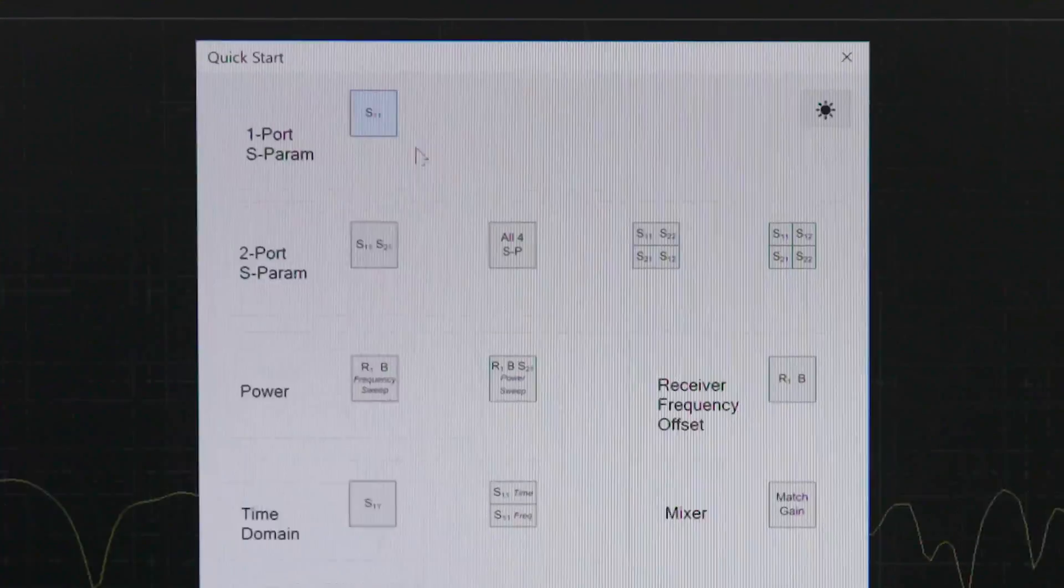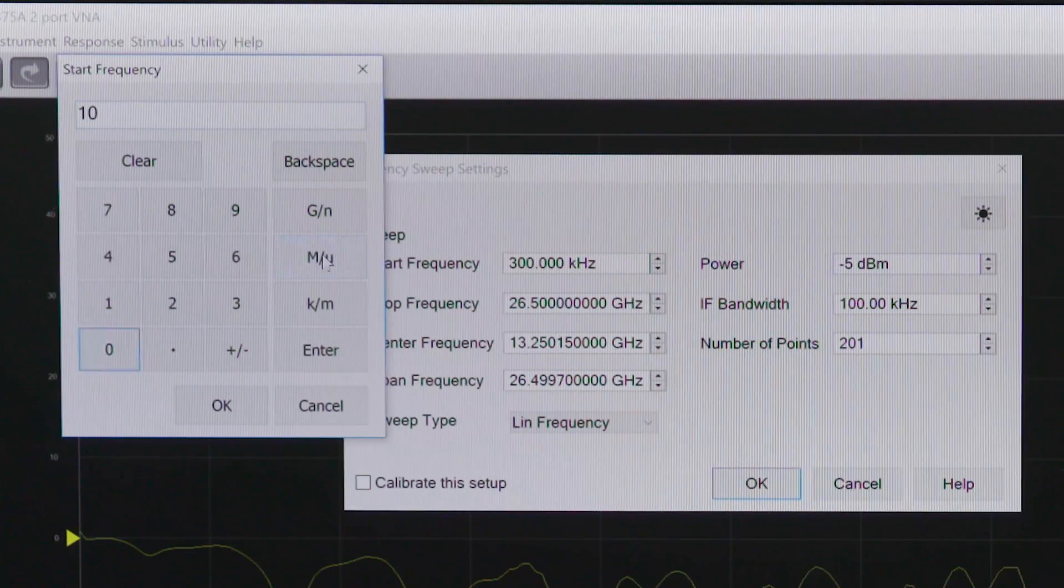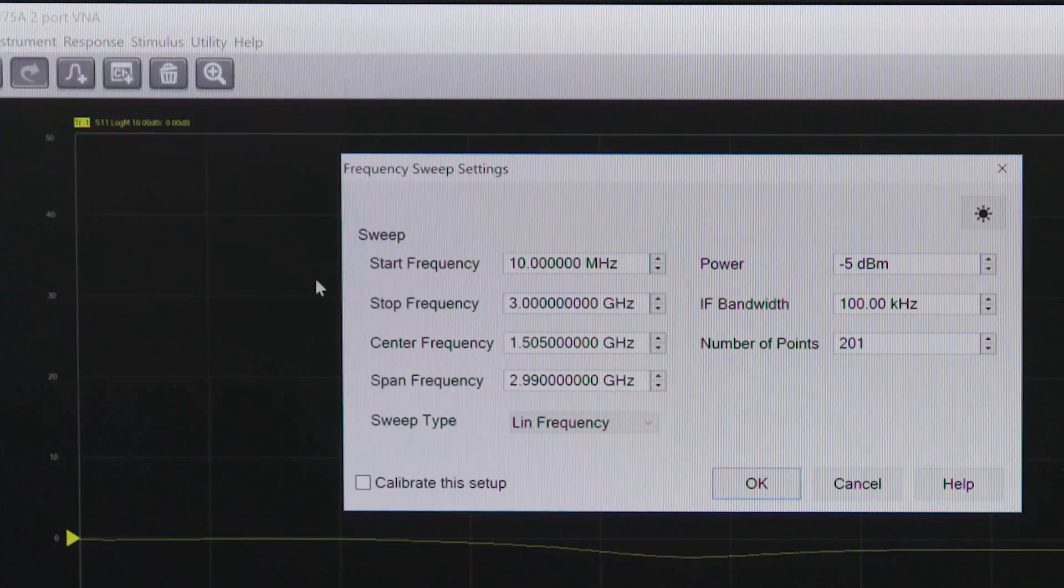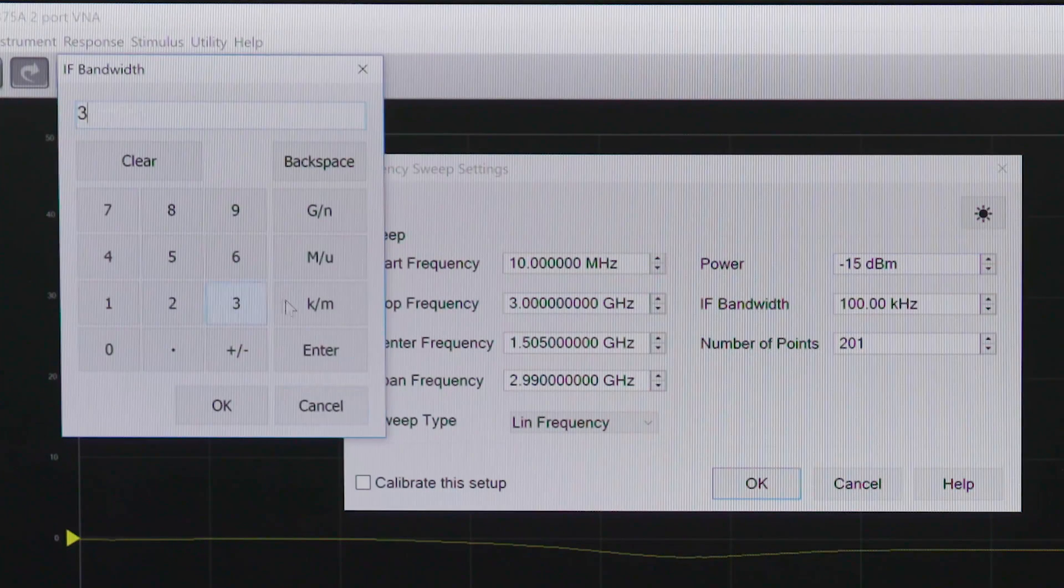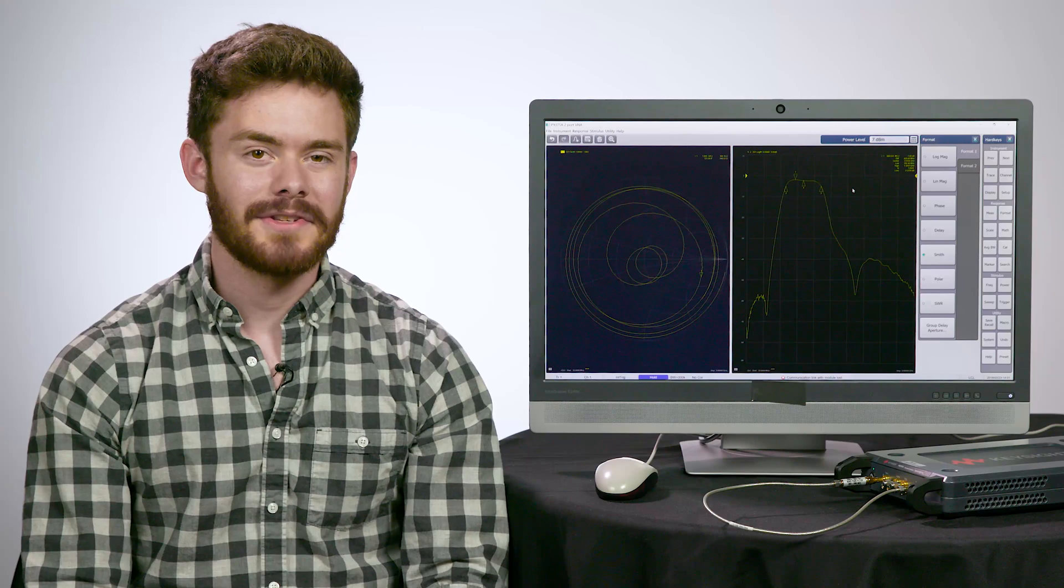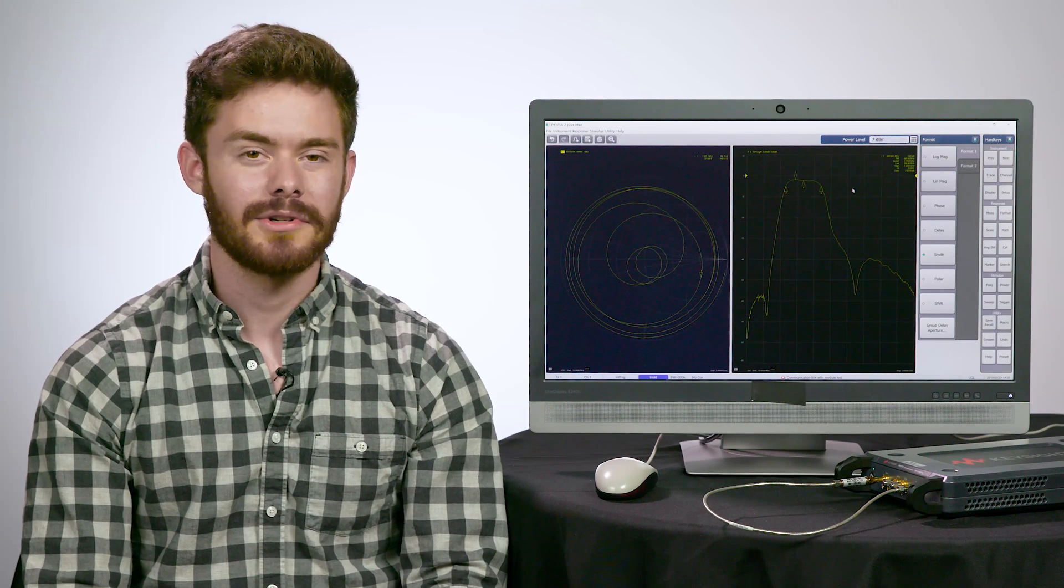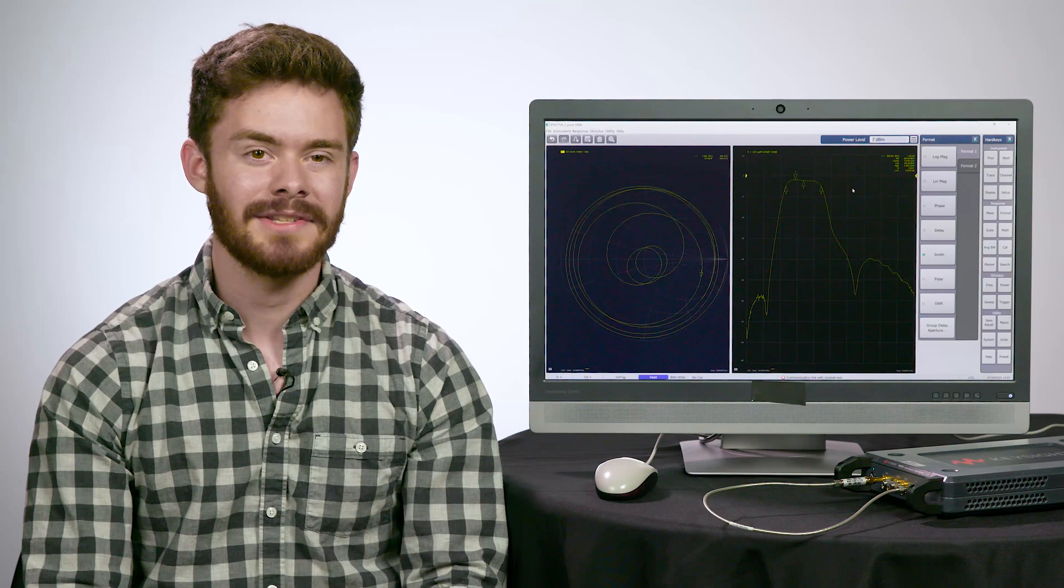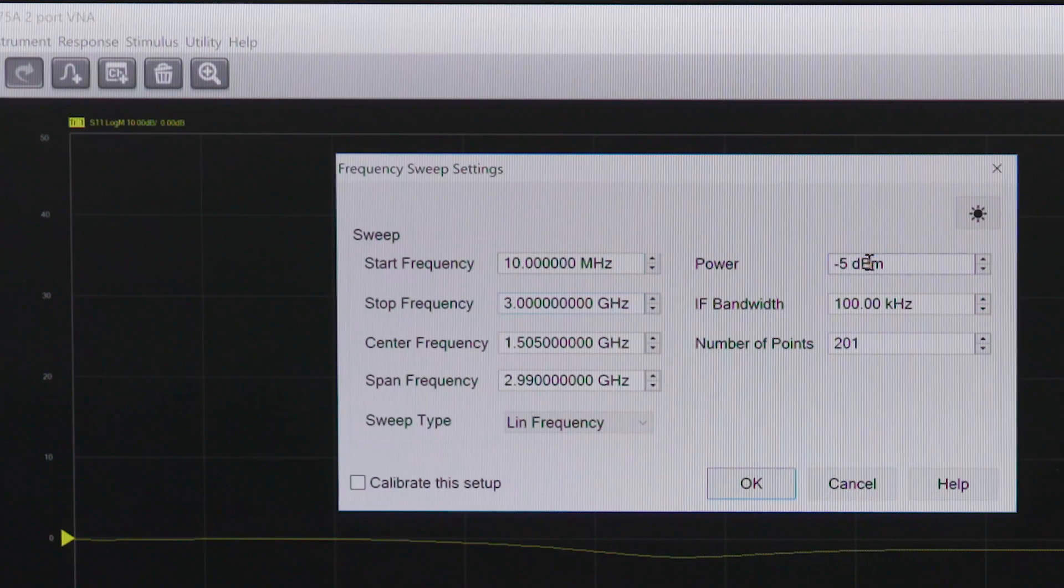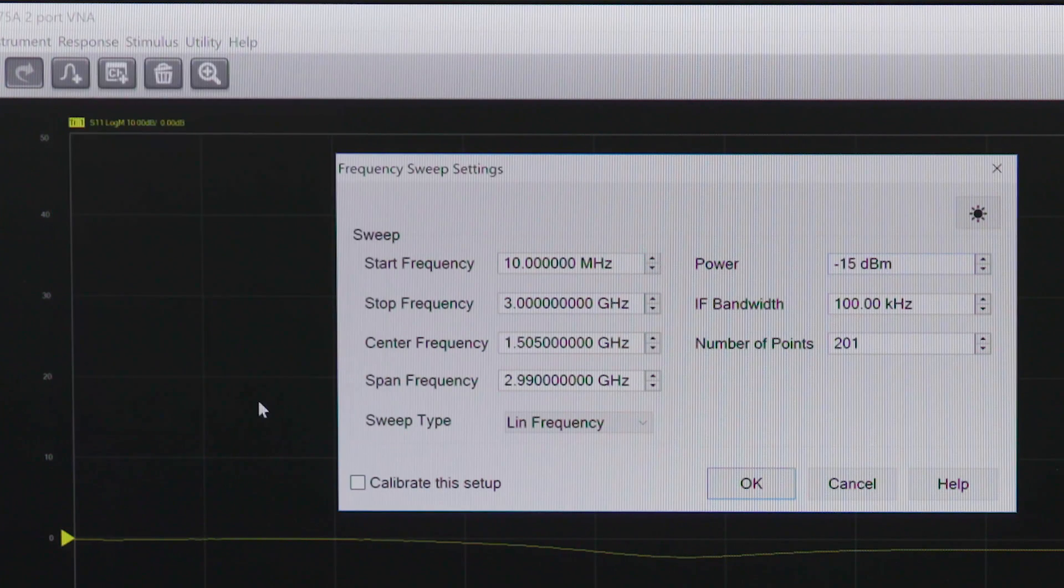Since we are only working with one port here, I'll select the One Port S Parameter option. This is where you will need to enter your start and stop frequencies, sweep type, power level, and the other parameters for your test. It's important to remember here that this new USB VNA's source power must be set correctly in order to avoid damage or compression inside the ECOW module. The power for this should be set to minus 15 dBm for the calibration operation.